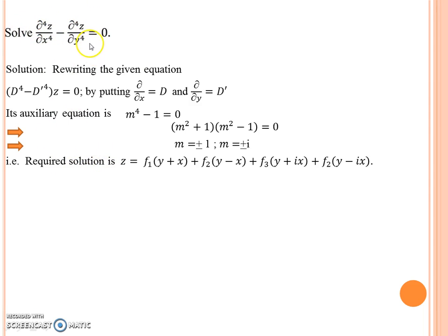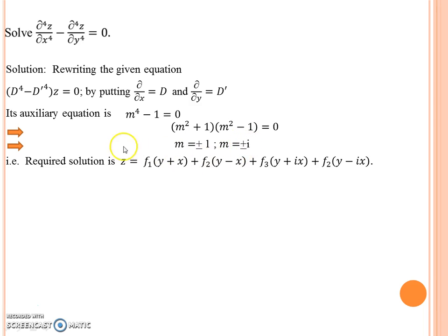First, we reduce the equation to symbolic form by putting del/del x equal to D and del/del y equal to D'. Then we find the CF. For the auxiliary equation, we put D equal to m and D' equal to 1. Here the equation is of order 4, so we get 4 roots: m = ±1 and m = ±i. Since the right-hand side is 0, the PI is 0, so the CF is the complete solution of the given equation.